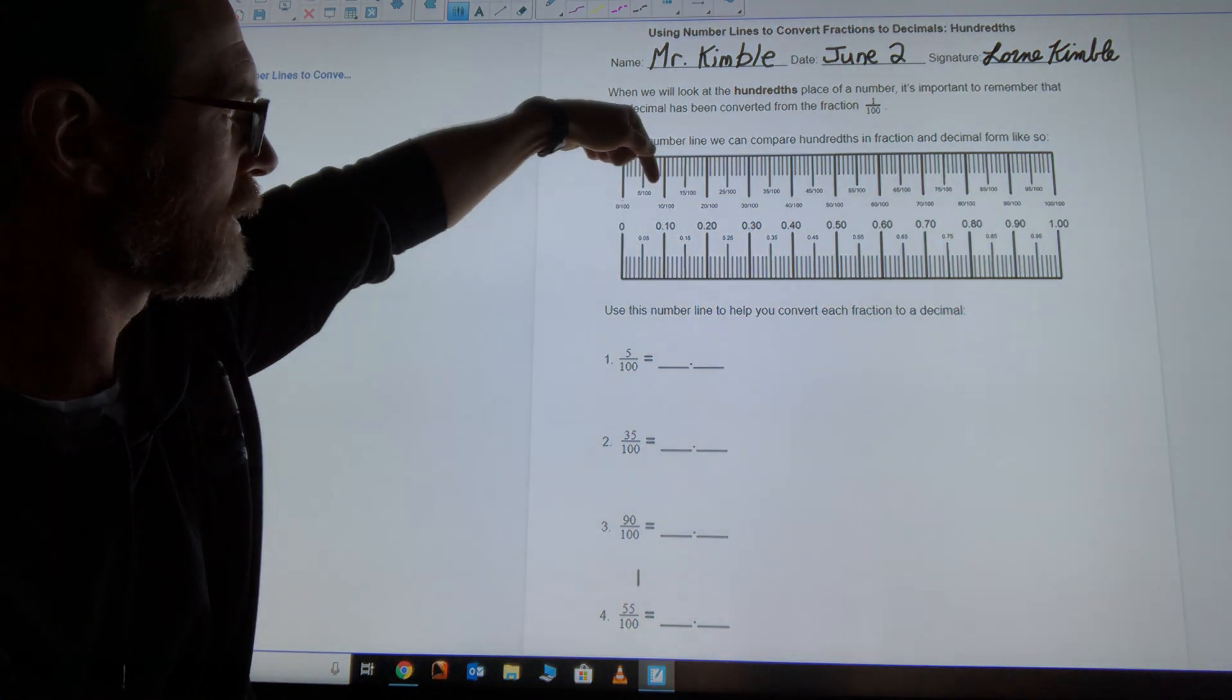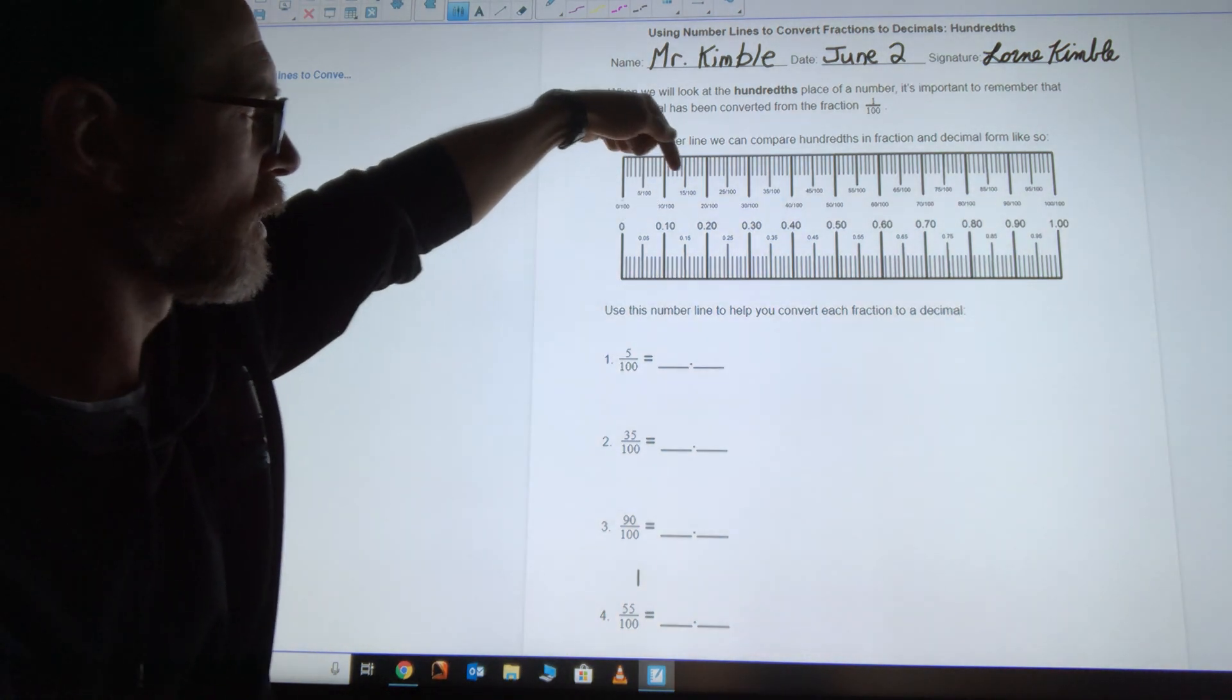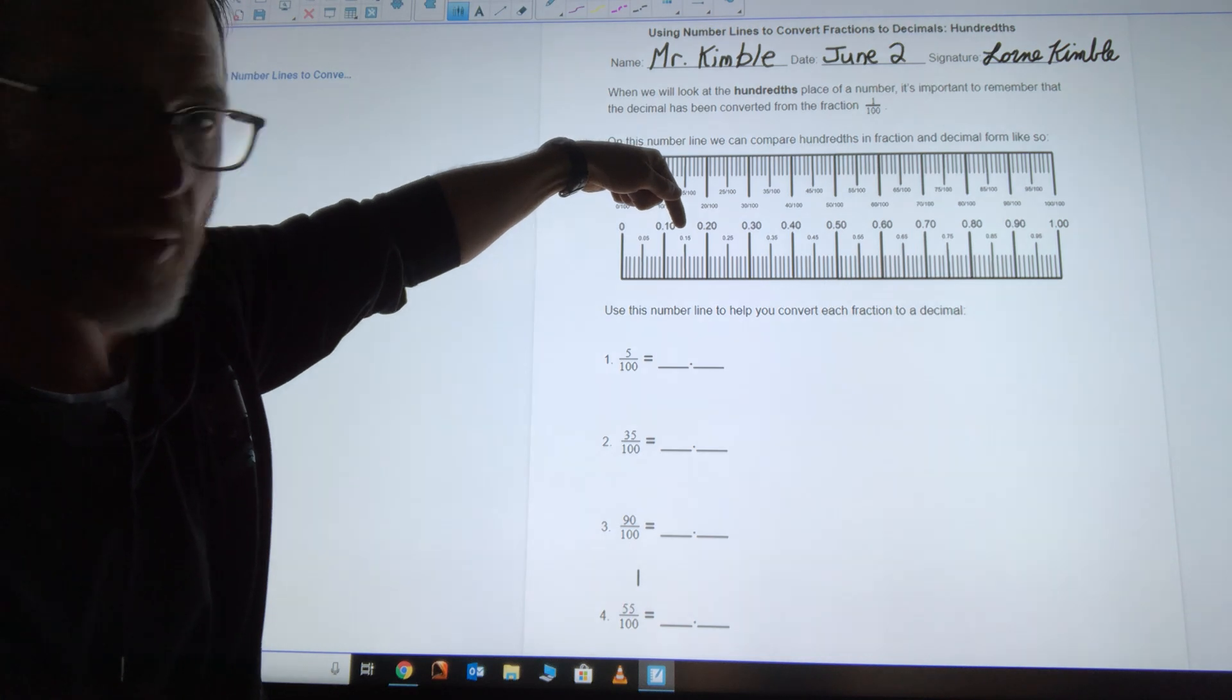Five hundredths is zero decimal zero five, ten hundredths is zero decimal one zero, fifteen hundredths is zero decimal one five. Okay?